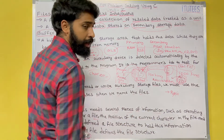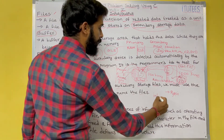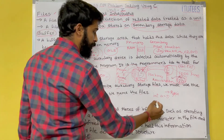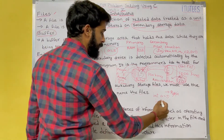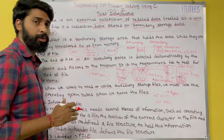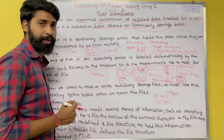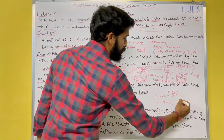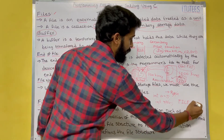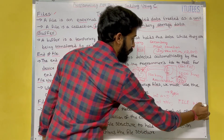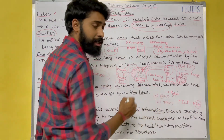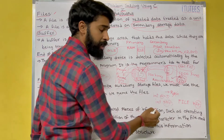The identifier for this predefined file structure is FILE — this is very important. For example, just as we declare an integer variable as int a, or an integer pointer as int *ptr, similarly if we want to declare a file pointer we use the data type FILE. So FILE *fp — here fp is the file pointer, just as a is an integer and ptr is an integer pointer.